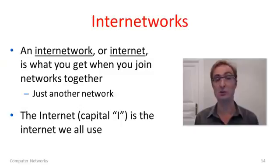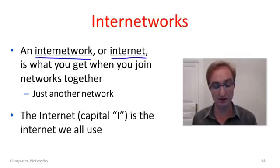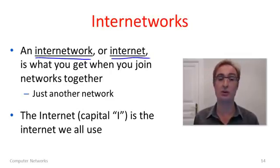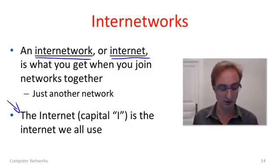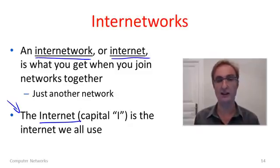Actually, I can tell you a little bit more about internet networks. So, an internet work, which we shorten to be the word internet, is what you get when you join networks together. Now, from our point of view, when you join two networks together, you're getting an internet. But it's just another kind of network, which we can manipulate in the same way. There's also a very special internet work. It's called the internet, with a capital I. That's the internet connection of networks that are all lumped together, which we all use every day.